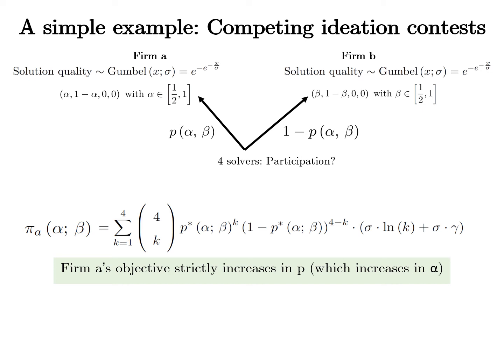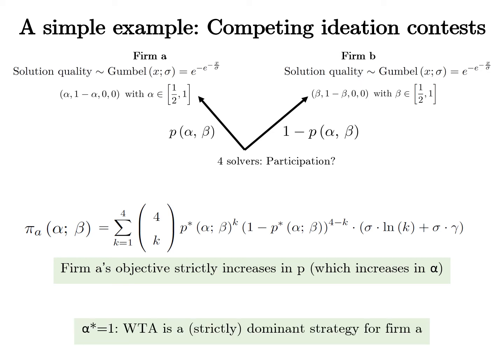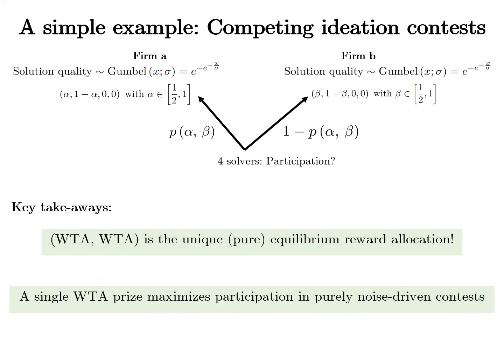So the firm's objective increases in solvers' entry probability, and that probability strictly increases in the firm's top prize. Since this holds for any arbitrary feasible allocation chosen by firm B, allocating a single winner-takes-all prize is the dominant strategy for firm A. Similarly, the same argument holds for firm B. This means that allocating a single winner-takes-all prize is the unique equilibrium for two competing firms in pure strategies, with no other symmetric or asymmetric pure equilibria.